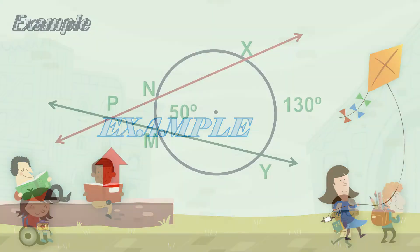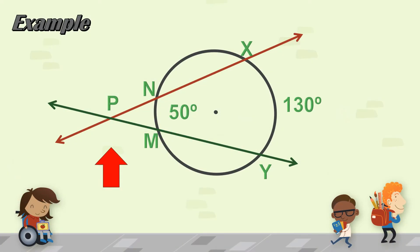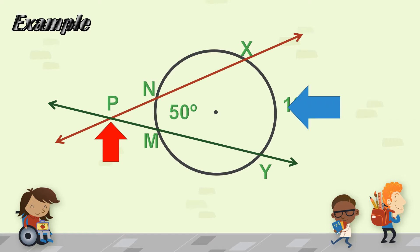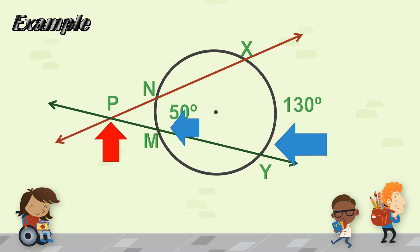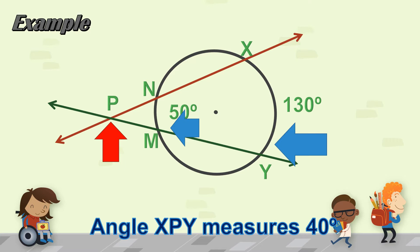Let's have an example. We would like to find out the measure of angle P. Our two secant lines formed two arcs inside the circle: arc XY with a measure of 130 degrees, and arc NM which is 50 degrees. So what we do is take the measure of arc XY — 130 degrees — minus arc NM — 50 degrees — and then divide by two. So 130 degrees minus 50 degrees is 80 degrees; divide that by two, so the measure of angle XPY is 40 degrees.